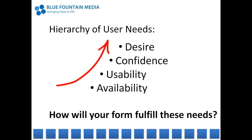First, you need to understand what it is that potential customers are looking for. If you've read the book entitled Submit Now by Andrew Cech, you'll know that in theory there are four main needs of a user that should be satisfied: Availability — making your form easy to find; Usability — making your form easy to fill out; Confidence — making users certain that they are taking the right action; and Desire — increasing the user's willingness to fill out the form.